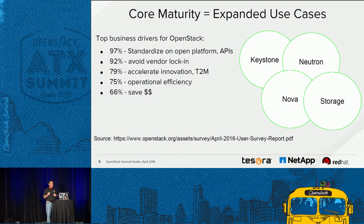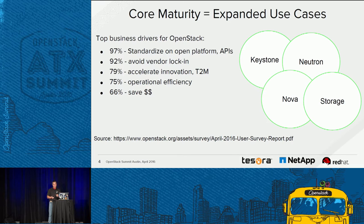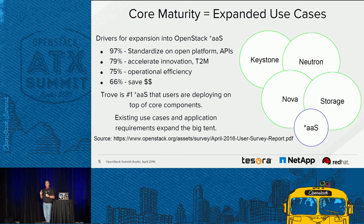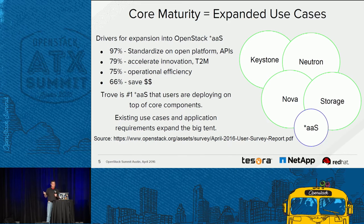The survey mentioned in the keynote showed 97% of people want standardization of APIs, 92% want to avoid vendor lock-in, but 66% want to save money. Ancillary services like Trove, Sahara, and file systems are things that can easily justify the move to OpenStack. Looking at the number one as-a-service component people add after their core components have matured and stabilized — it's Trove and database as a service. We pulled this directly from the user survey and it matches what we see as a company at Red Hat.